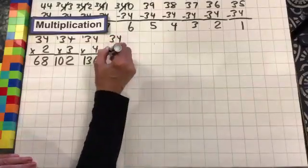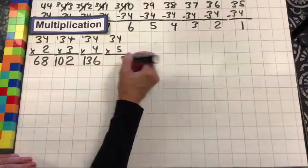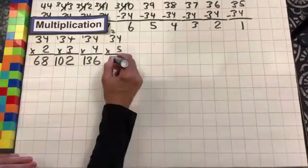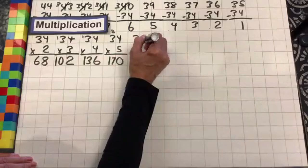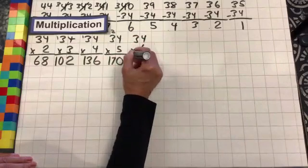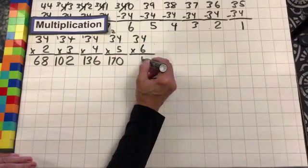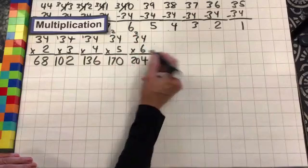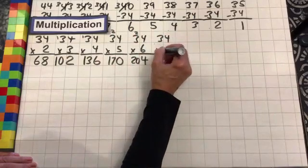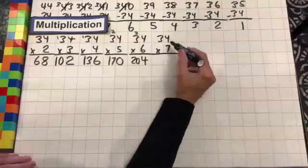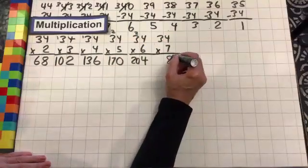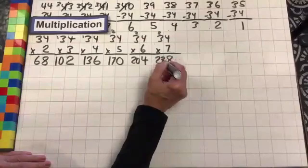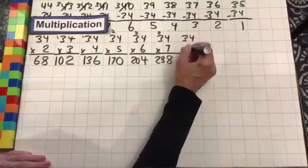34 times 5: 5 times 4 is 20 — drop the 0, carry the 2; 5 times 3 is 15, plus 2 is 17. 34 times 6: 6 times 4 is 24 — drop the 4, carry the 2; 6 times 3 is 18, plus 2 is 20. 34 times 7: 7 times 4 is 28 — drop the 8, carry the 2; 7 times 3 is 21, plus 2 is 23.